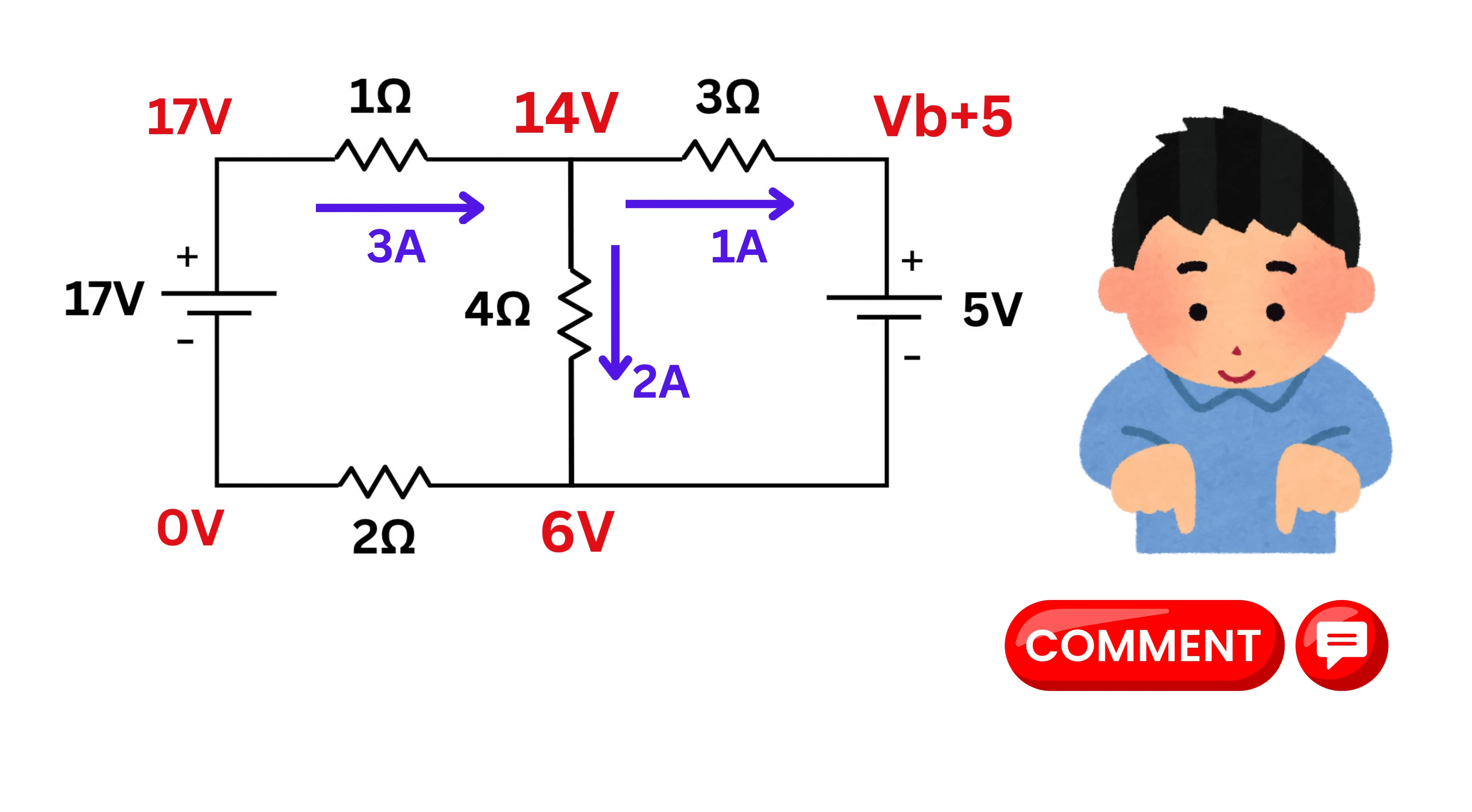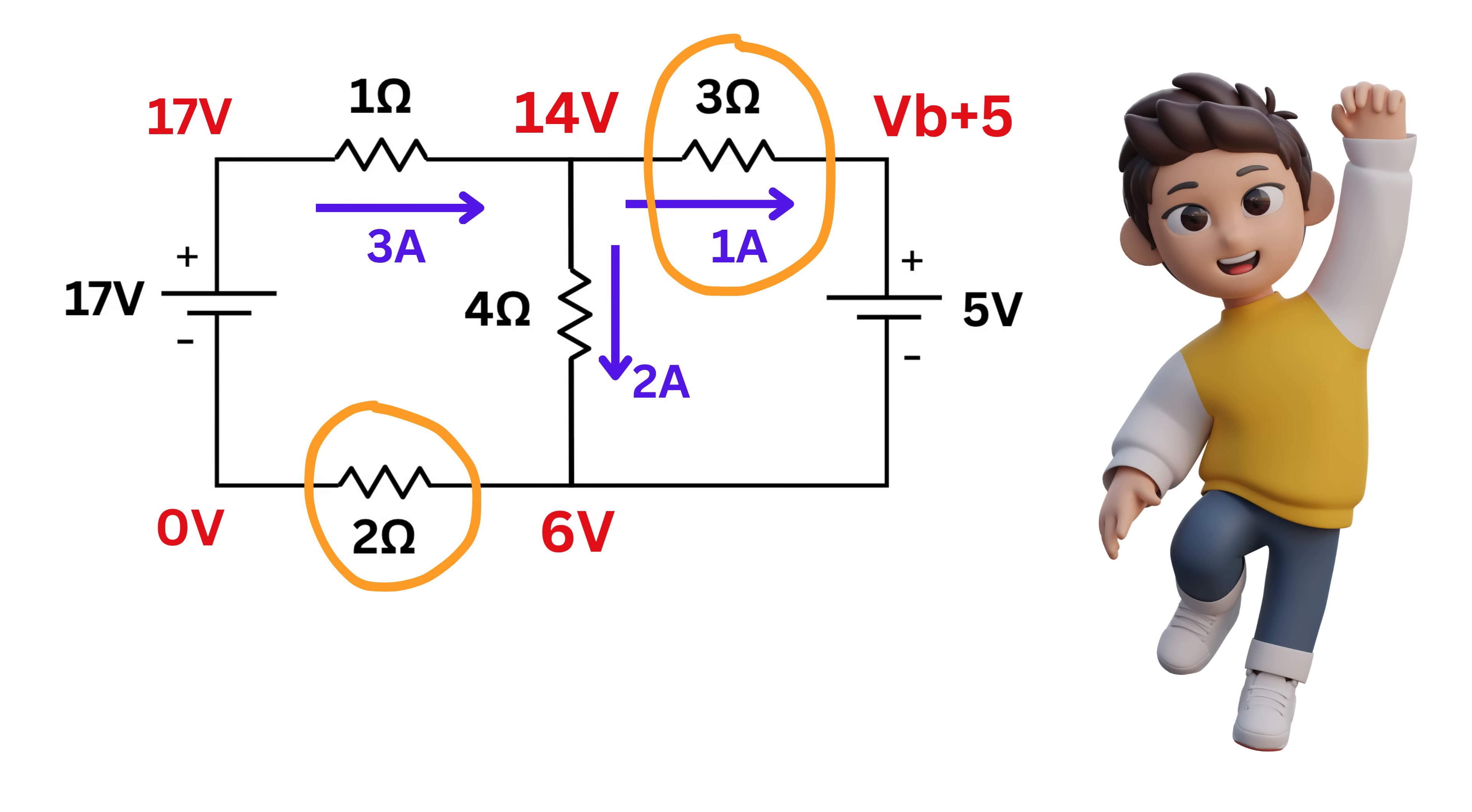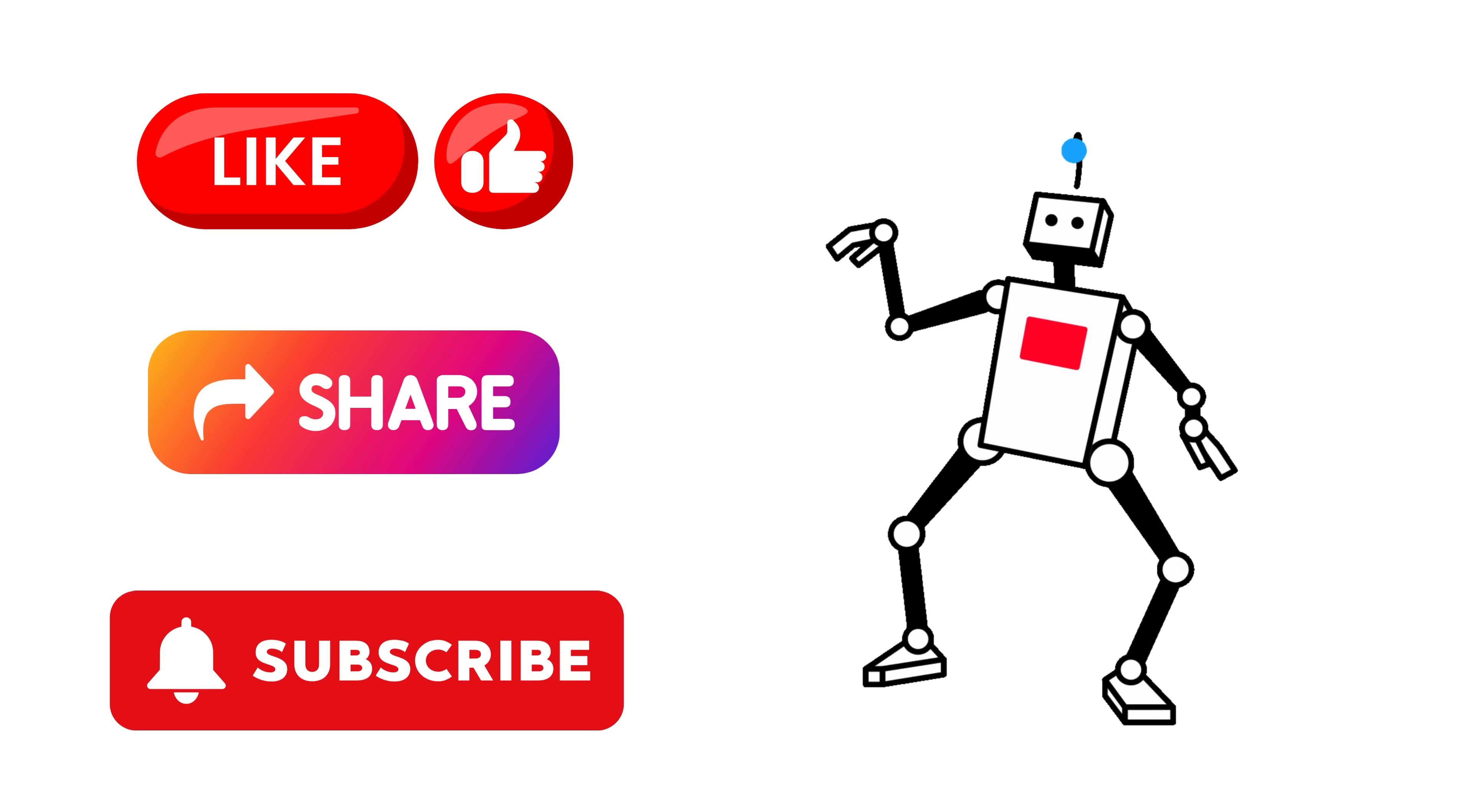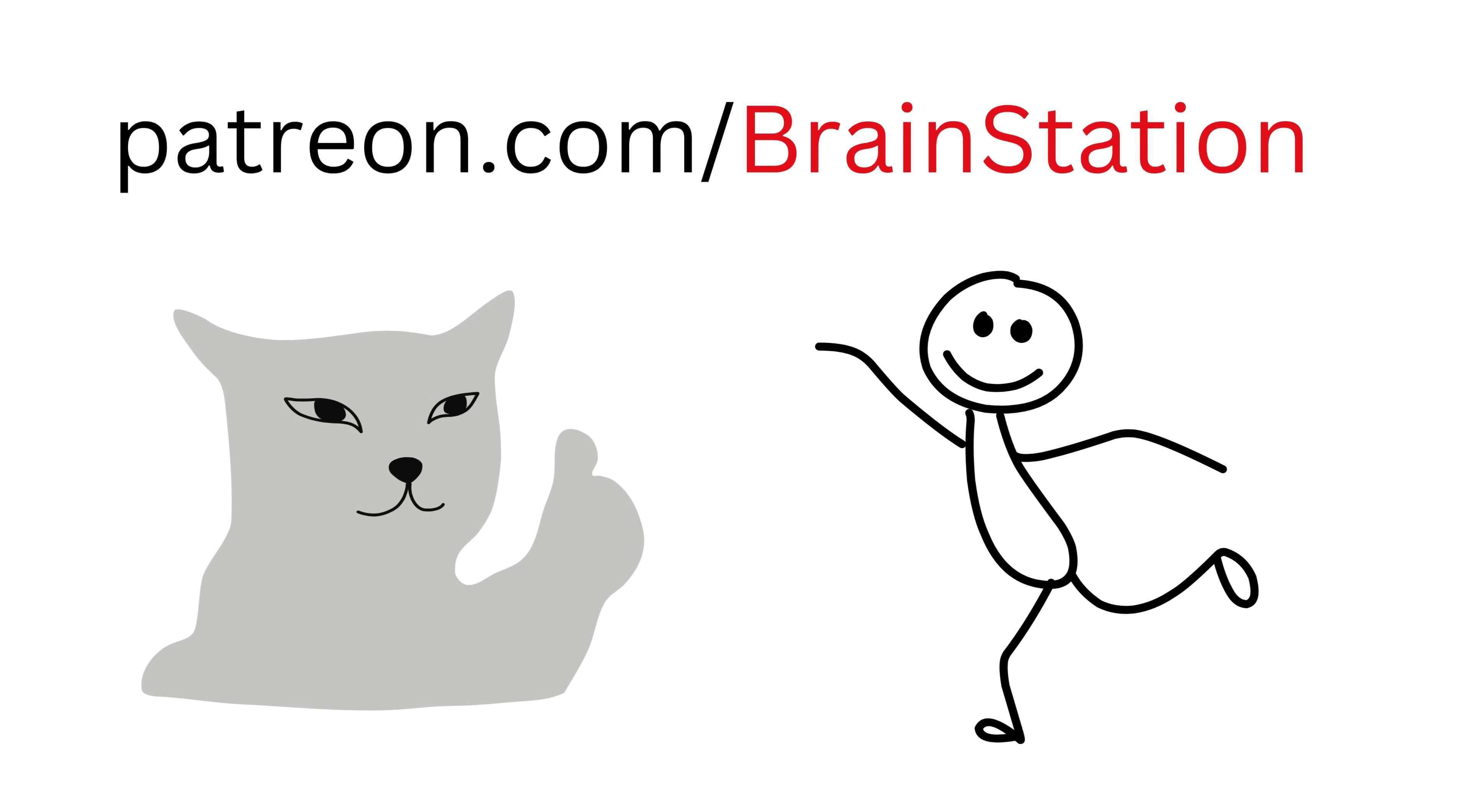Now let me know in the comments what will be the voltage drop across these 2 ohms and 3 ohms resistors. See how easy circuit analysis becomes with the help of KCL and KVL. If you enjoyed this video please don't forget to like, share and subscribe to our channel. Also you can support my channel by joining our community and becoming a member. So good.